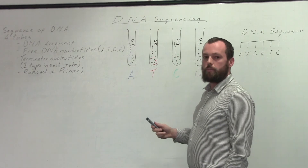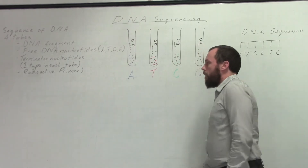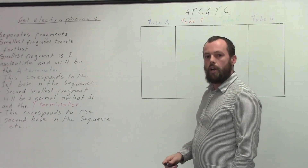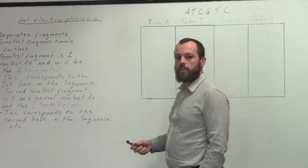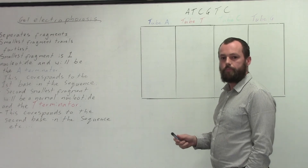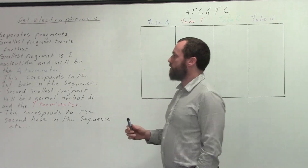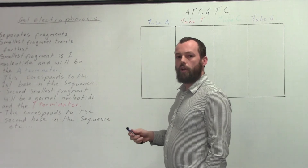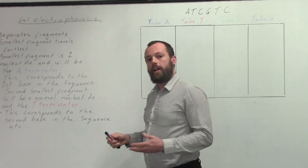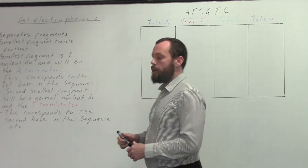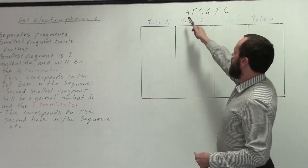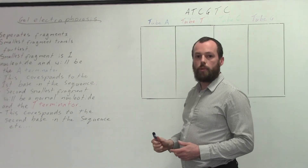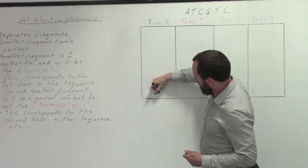So how can we use these different sized fragments to sequence the DNA? That brings us to the next step, which is gel electrophoresis. We can separate out the fragments from each of the four test tubes, and we see an electrophoresis plate here. We need to note that the smallest fragments will travel furthest. The smallest fragment will only be one nucleotide long — this will be an A terminator fragment. Remember our code, ATCGTC? You'll only get a fragment which is one nucleotide long in the test tube with the A terminator, so that will travel furthest.